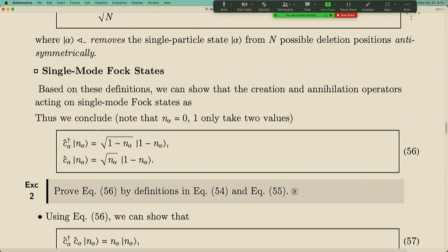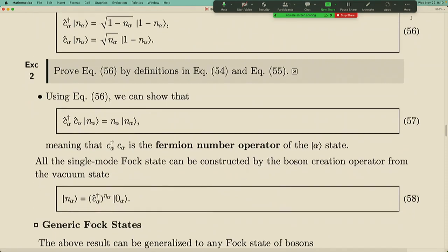For the annihilation operator, it's similar. If you start from the vacuum state, the pre-factor has a safeguard effect preventing you from reaching the negative particle number state. But if you start from a one-particle state, the pre-factor simply becomes one, meaning annihilation gives you the zero-particle state. For fermions, it's very simple because particle number can only take zero or one — it's like a switch, either open or closed, occupied or empty. The creation and annihilation operators simply switch between these two possibilities.